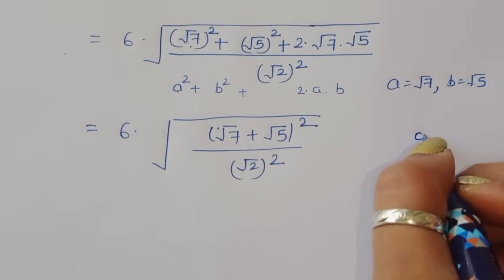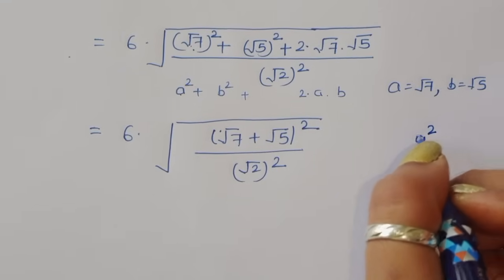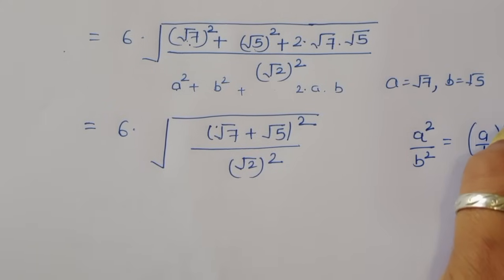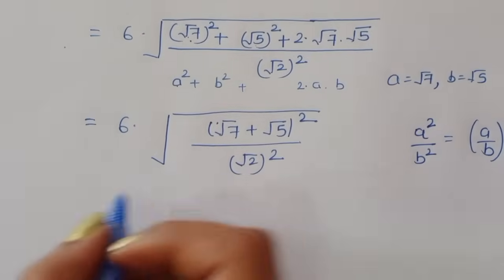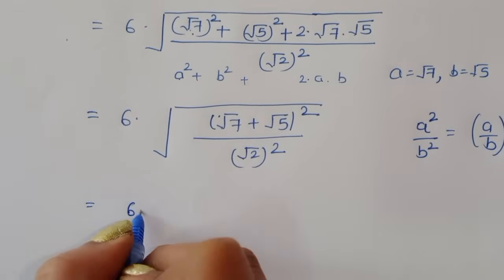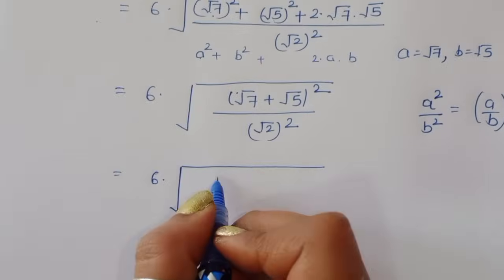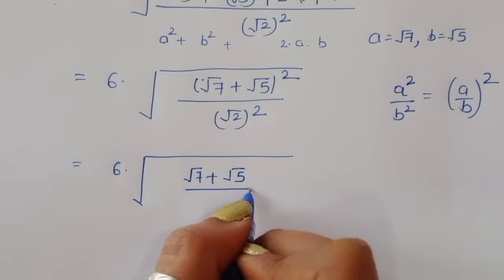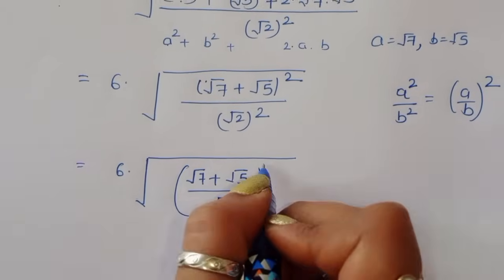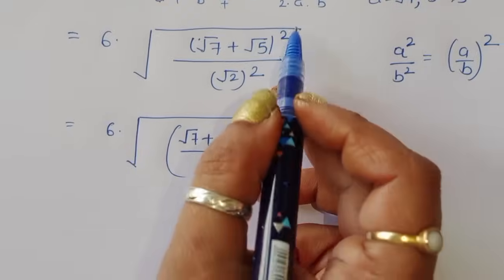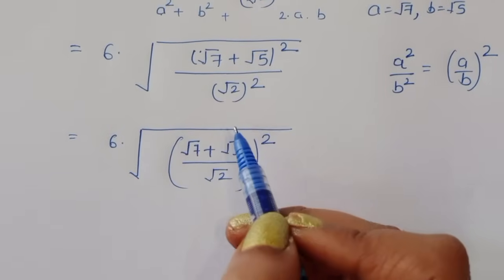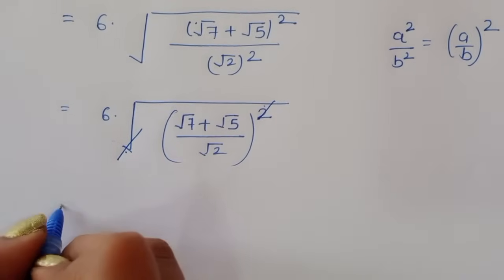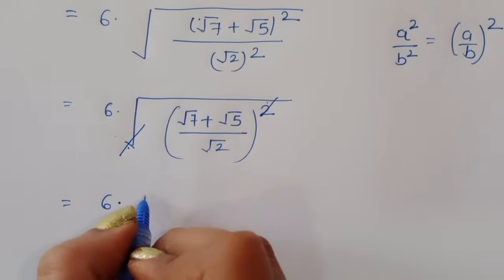Using the formula a squared divided by b squared equals (a upon b) whole square, we can write this as 6 times (square root of 7 plus square root of 5 divided by square root of 2) whole square. The square cancels with the square root, leaving 6 times (square root of 7 plus square root of 5) divided by square root of 2.